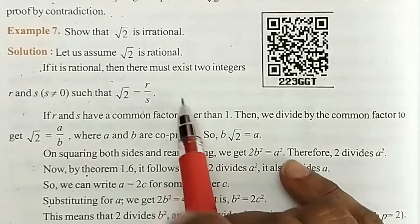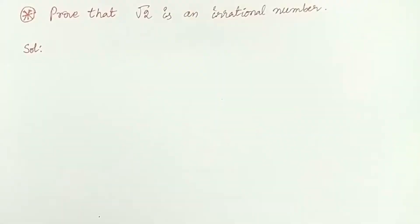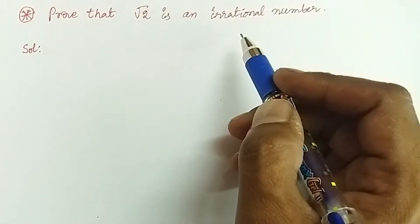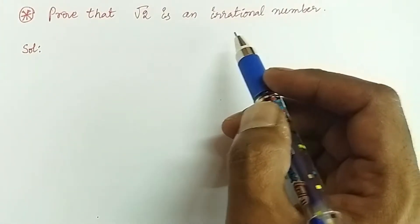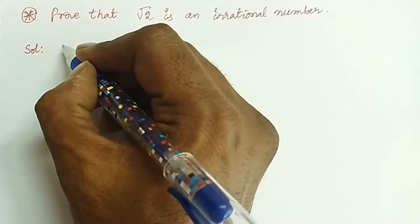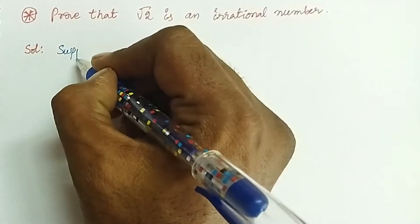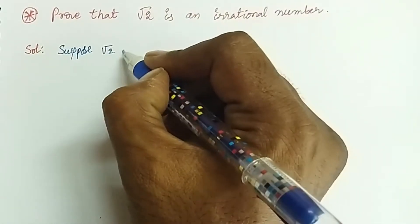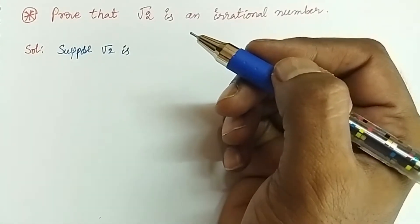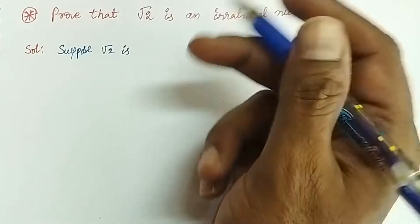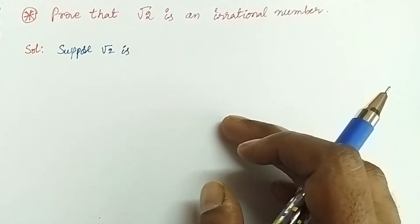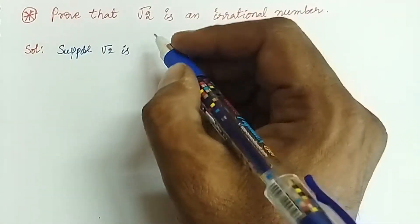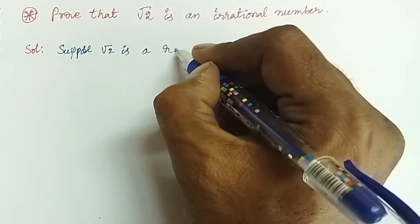Show that root 2 is irrational. We will prove this using indirect proof. So the first step is: suppose root 2 is a rational number. This is the indirect method, or indirect proof — we suppose root 2 is a rational number.